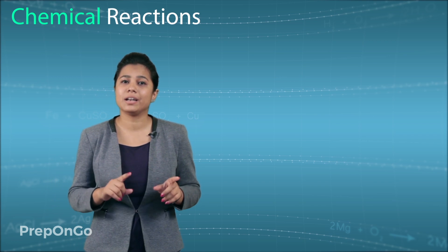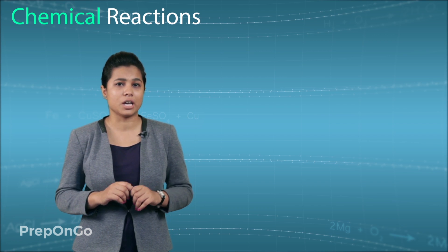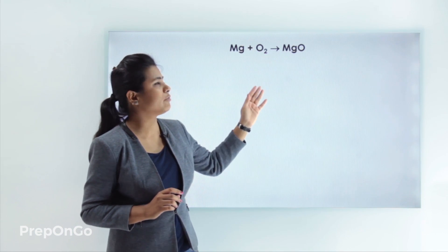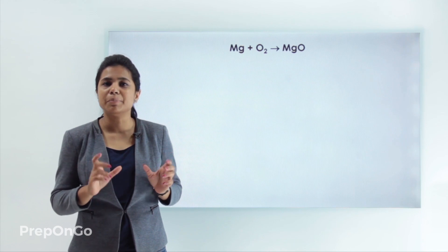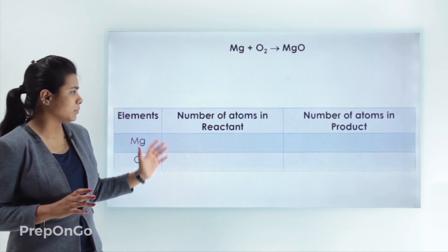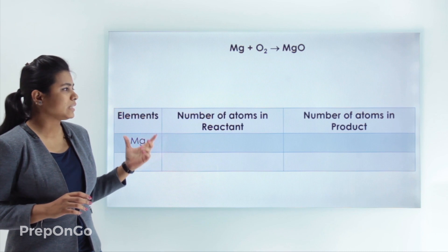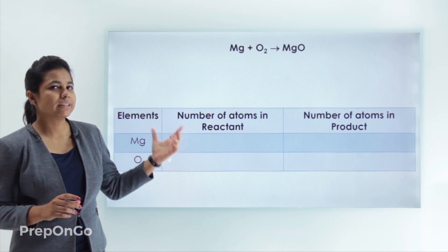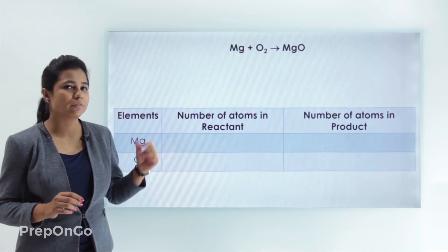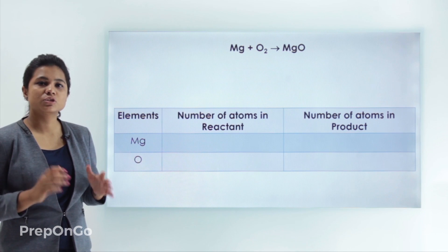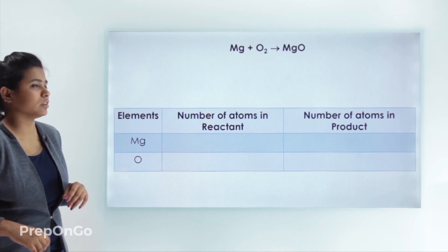We will now learn to balance these equations. The first equation is magnesium reacting with oxygen to give magnesium oxide. The simplest way to balance a chemical equation is to draw a table with three columns: the first column lists the elements, the second column has the number of atoms of each element in the reactants, and the third column has the number of atoms in the products.